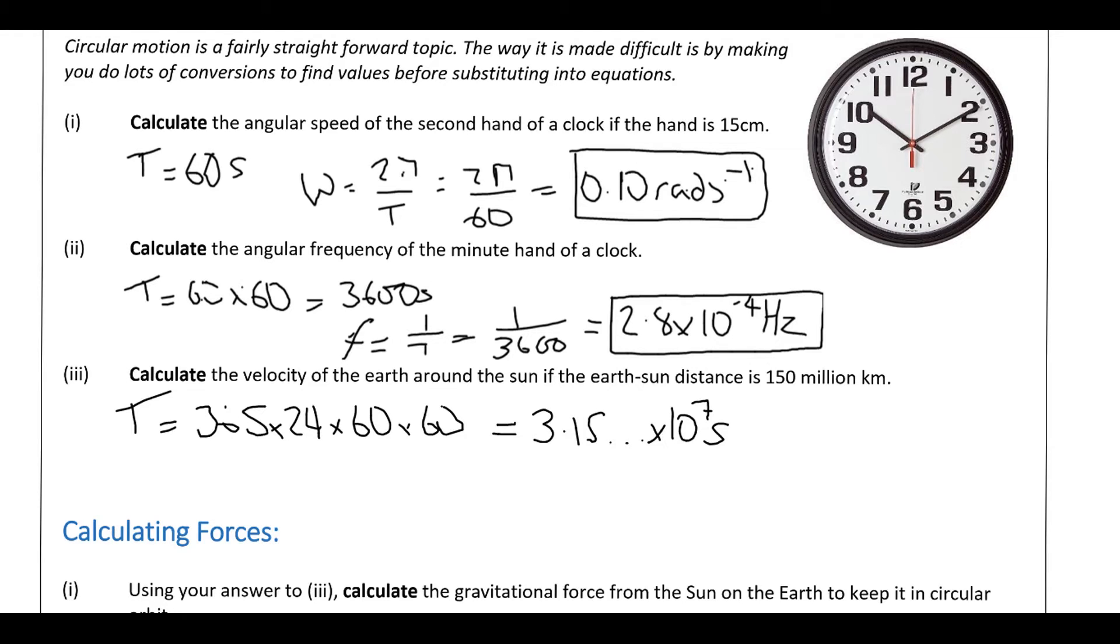So tangential velocity is the radius times the angular speed, which is the radius times by 2π over the time period there. So we've got 1.50 times 10 to the 11 metres times 2π, all over 3.15 times 10 to the 7. When we calculate that what we get is 3.0 times 10 to the 4 metres per second, or 30,000 metres per second. So pretty speedy there.